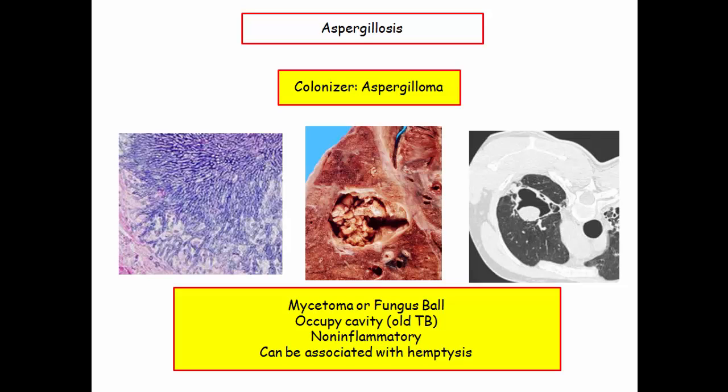The aspergilloma occupies old cavities, as in previous TB. This is a non-inflammatory colonized state. As a colonizer, it will be discovered incidentally on imaging, or the patient may present with hemoptysis. Questions on this are few and far between, but when presented, they are pretty straightforward.